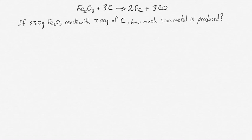Consider the process for extracting iron metal from hematite ore, where hematite is reacted with carbon and gets reduced by the carbon to produce iron metal. You've got 23 grams of hematite reacting with 7 grams of carbon, and we want to know how much iron metal is produced.